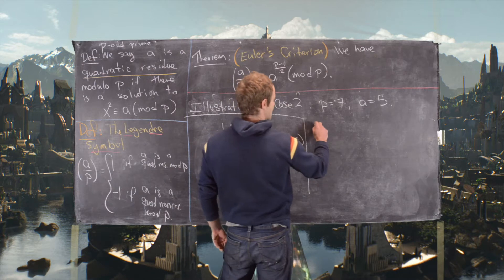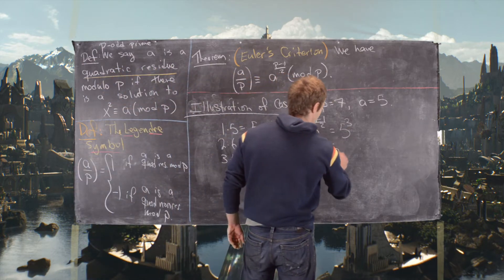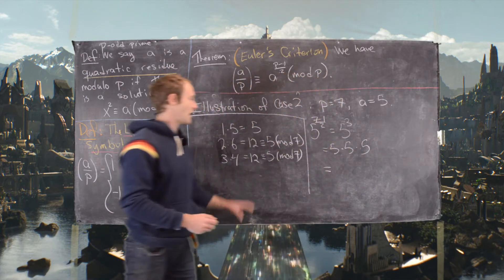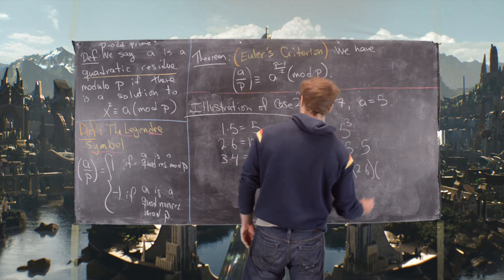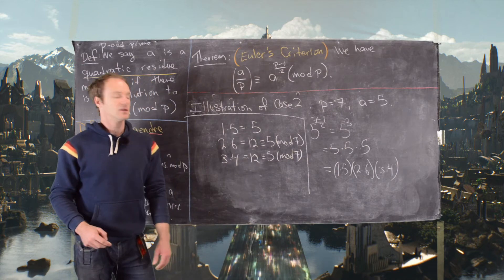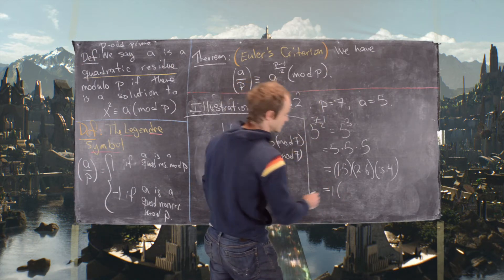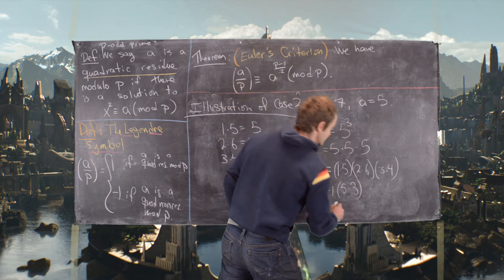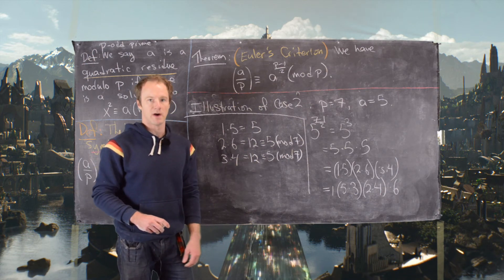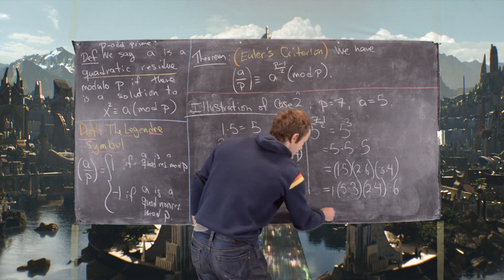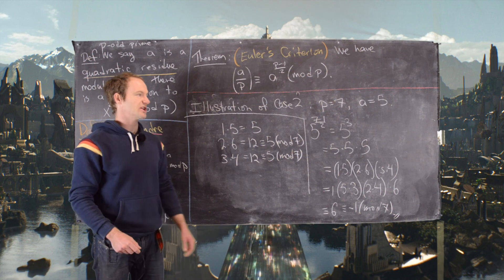We compute 5^((7-1)/2) = 5³ = 5 × 5 × 5. Replacing each 5 with a factor pair gives (1×5) × (2×6) × (3×4). Rearranging: 1 × (5×3) × (2×4) × 6. Now 5×3 = 15 ≡ 1 (mod 7) and 2×4 = 8 ≡ 1 (mod 7), so the product is 1 × 1 × 1 × 6 = 6 ≡ -1 (mod 7). This nicely illustrates the second case of the proof.